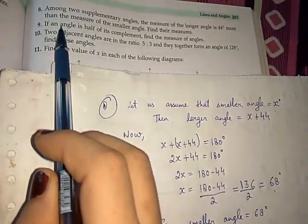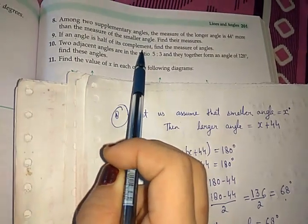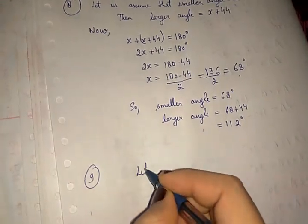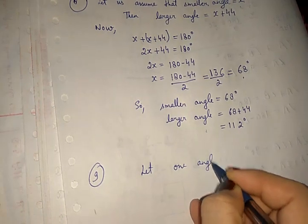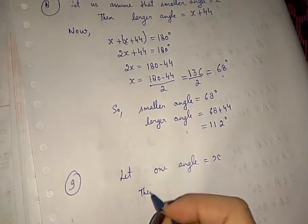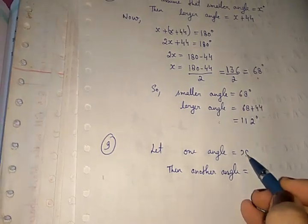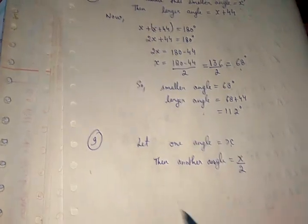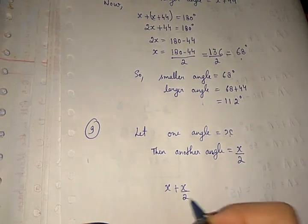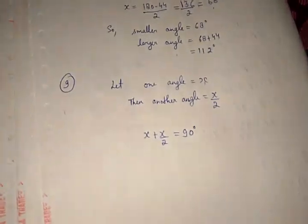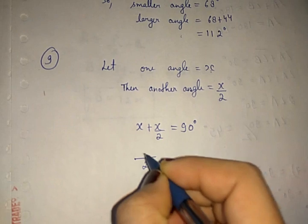Question number 9: If an angle is half of its complement, find the measure of the angle. We let one angle equal x. Then the other angle will be half of this angle, that is x divided by 2. The sum of both will equal 90 degrees because they are complementary.